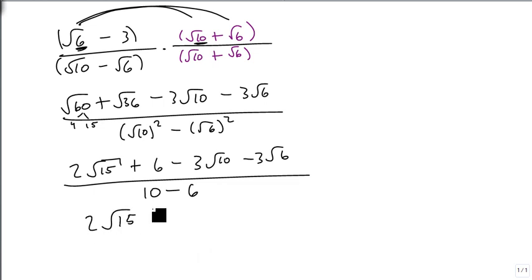So our answer appears to be 2√15 + 6 - 3√10 - 3√6, all over 4.